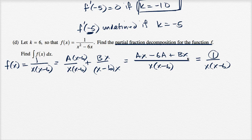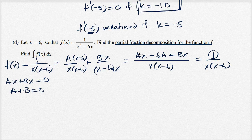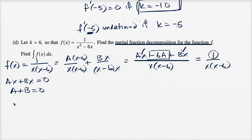The x terms must cancel out since we have no x terms in the numerator. So ax plus bx equals zero, meaning a plus b equals zero. And the constant term must equal one, so negative six a equals one, which gives a equals negative one sixth.